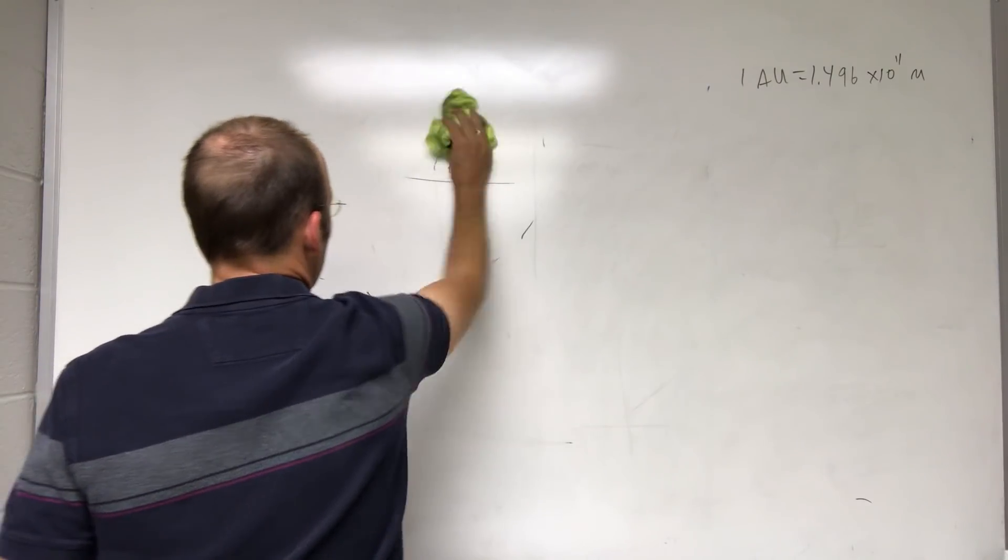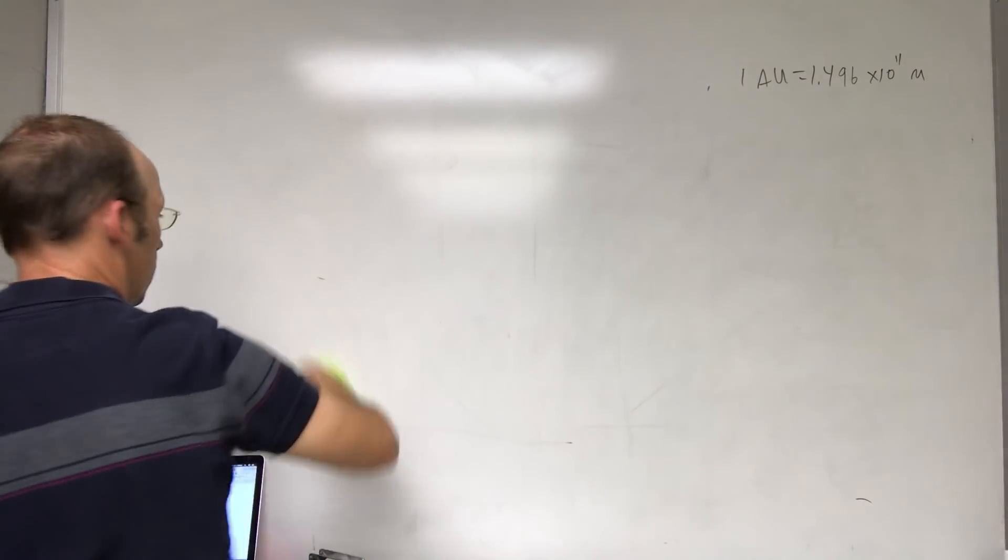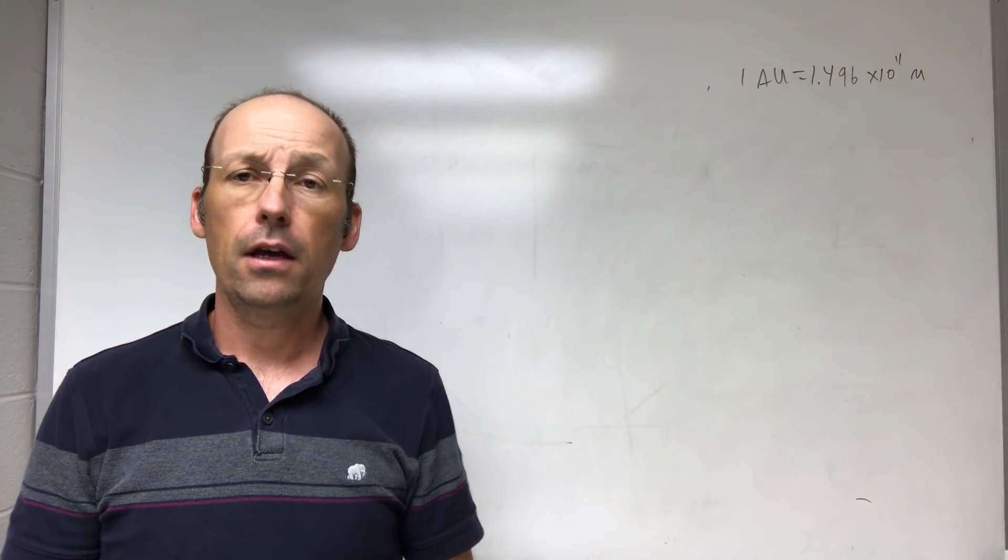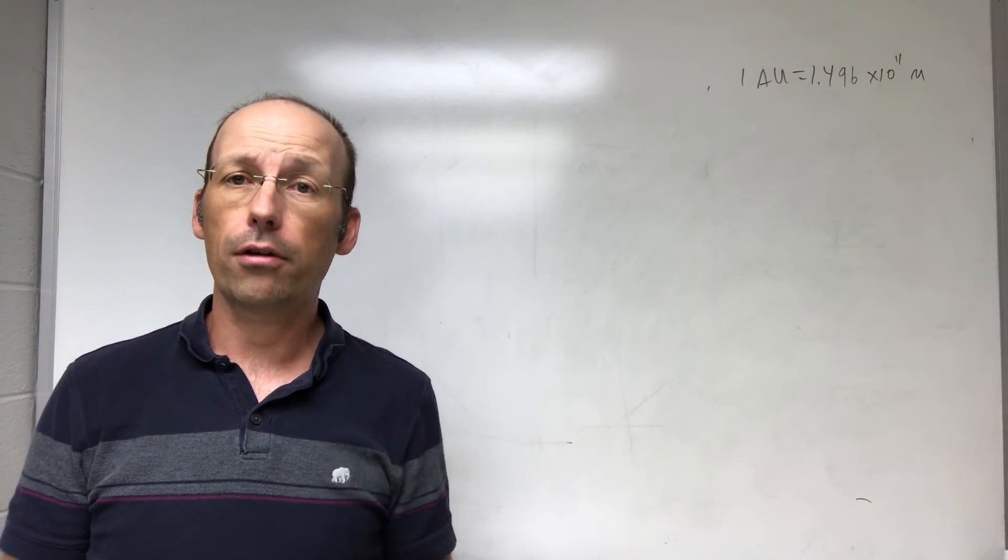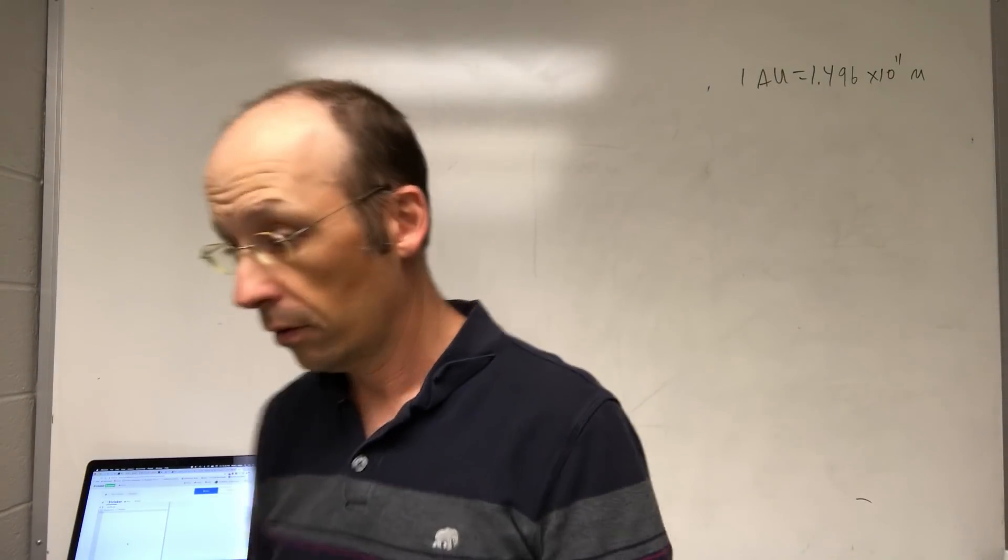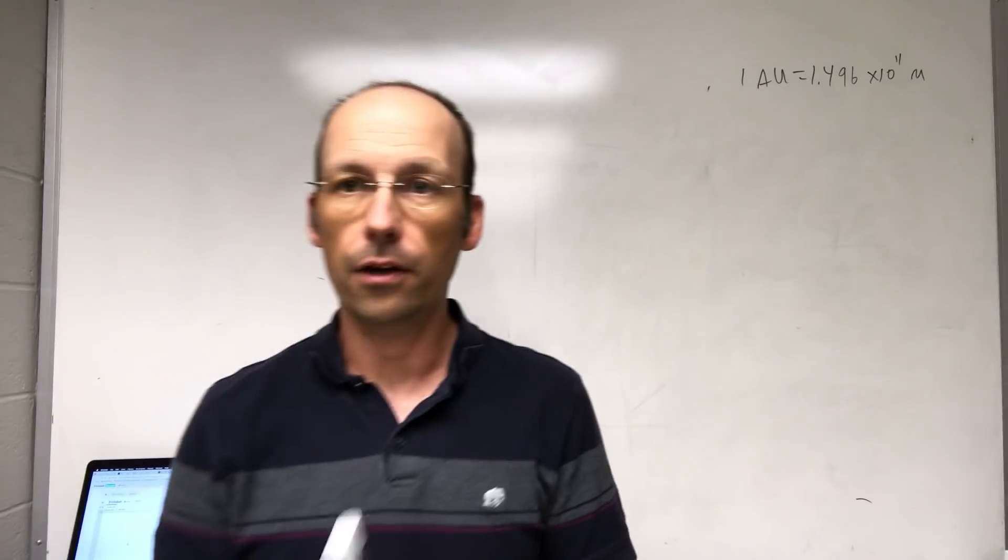Now, what if I want to measure the distance to a star? Well, AU doesn't really work, right? Because it's too far away. So here's where we get to the parsec. And the parsec depends on parallax. Watch this. You can do this yourself with your eyes, but I'm going to do it with my marker. Okay, so here I have a red pin and a marker.